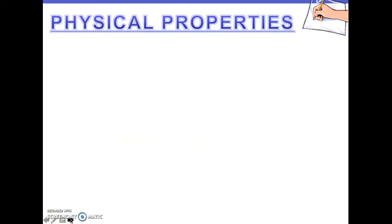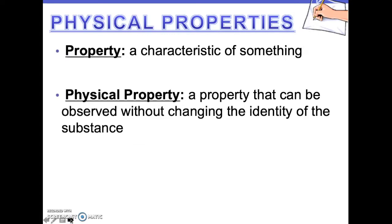Physical properties. Let's begin here. A property is a characteristic or feature of something. A physical property is a property that can be observed without changing the identity of the substance. This means that it's a feature or characteristic that we can observe in something without having to create some chemical reaction in order to observe it.